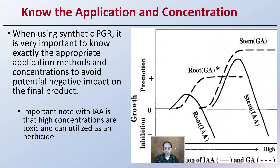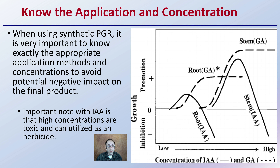You want to know the application and the concentration. With all hormones, when using synthetic PGRs, it's very important to know exactly the appropriate application method and also the concentrations to avoid potential negative impact on the final product. Certain auxin family hormones applied at high levels can actually act as herbicides and basically kill plants — like 2,4-D, which falls into that category. High concentrations of IAAs are toxic and utilized as an herbicide. So a little can be good, but a lot can potentially kill the plant. Know the application, know the right concentration, and look at scientific studies in detail to make sure you're getting the potential benefits without any negative side effects.